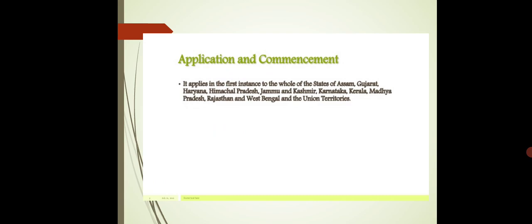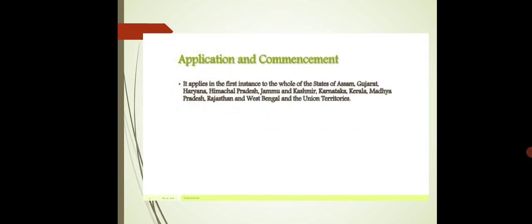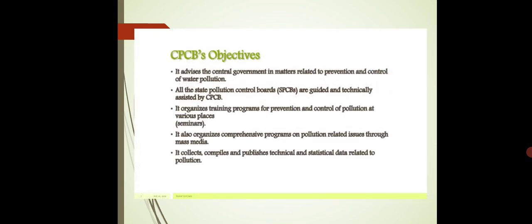Various states work under CPCB. When it comes to states, they fall under the SPCB — the State Pollution Control Board. States such as Gujarat, Assam, Himachal Pradesh, Jammu & Kashmir, Karnataka, Kerala, etc., are included. CPCB helps these states to prevent and control water pollution.